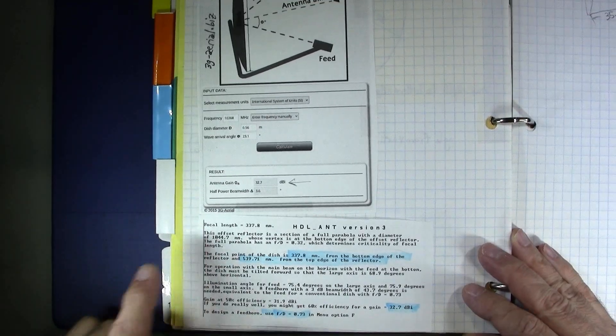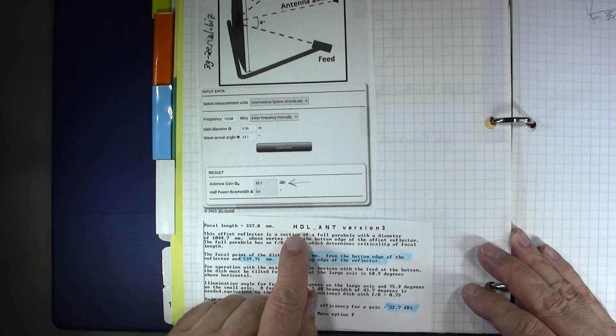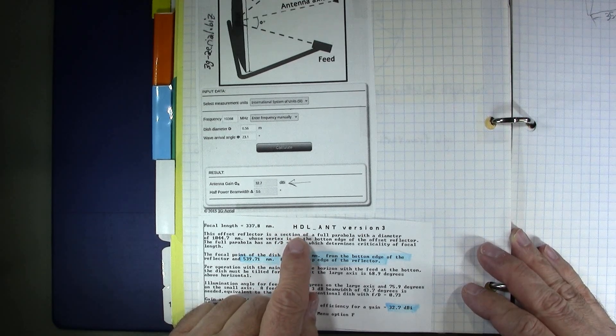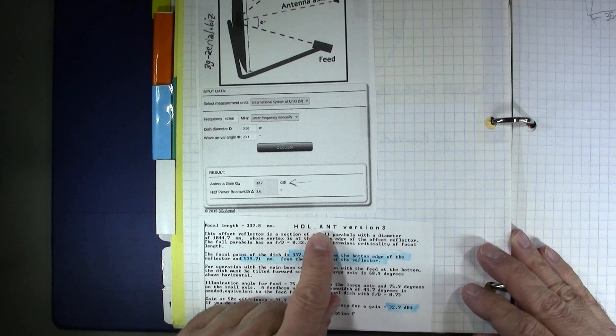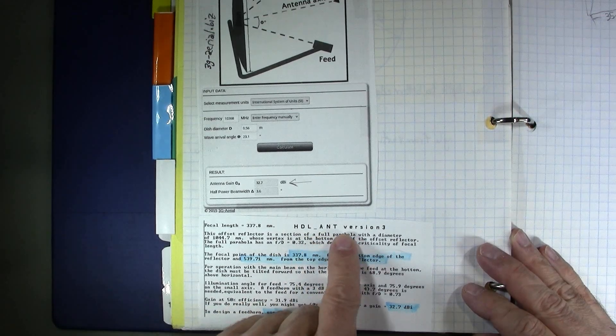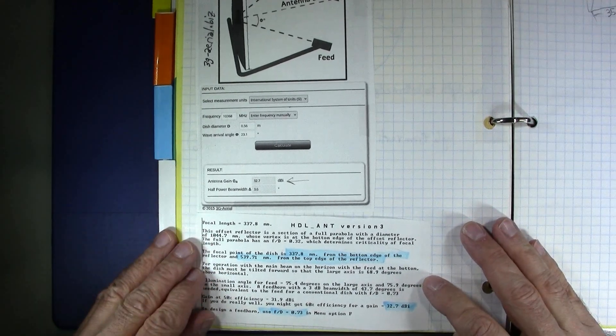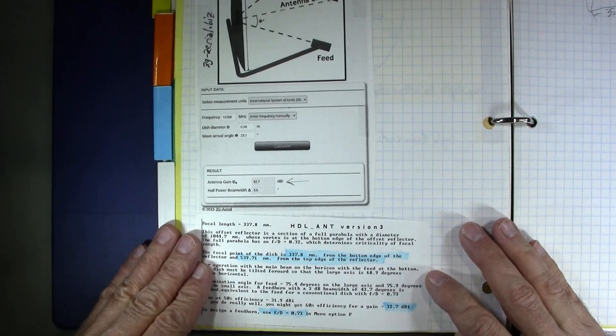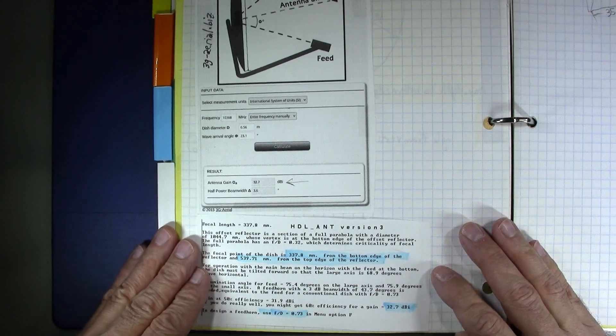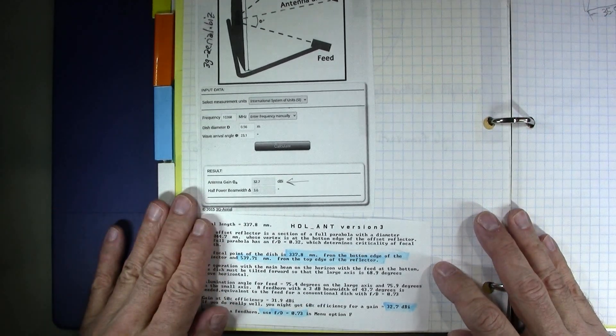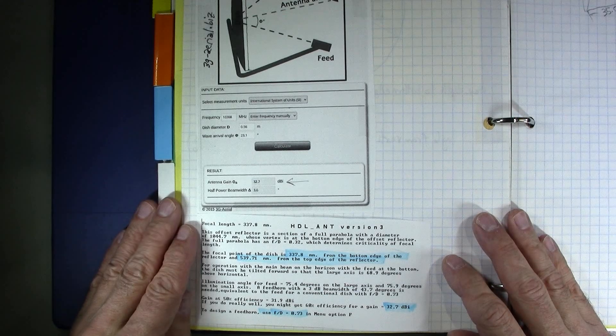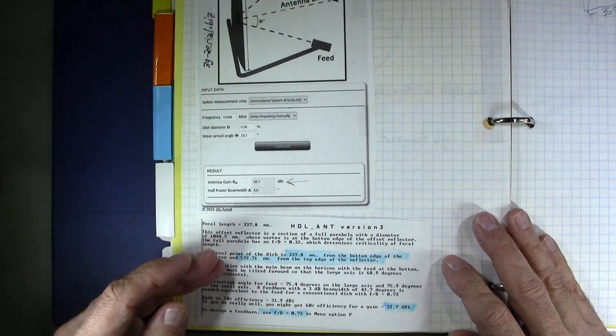Now if we use another tool, it's from W1GHZ, Paul Wade. It's called HDL Ant for antenna version 3. This is a DOS program. You can run it in old versions of Windows in the command prompt window. And this tool has many features for calculating offset dishes, feed points and so on.